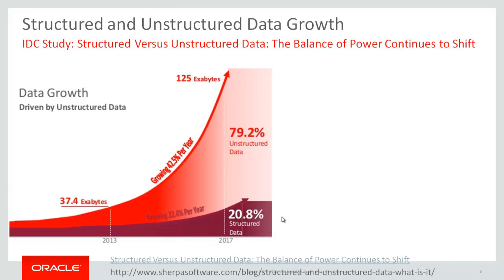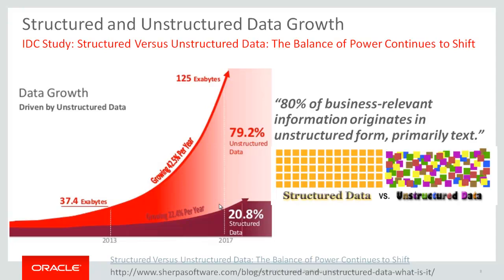Unstructured data is growing at a huge rate — studies cite 42.5% per year for unstructured data, though those numbers are probably underestimated. Regardless of which study you look at, the numbers are exploding, and the majority of all data is in fact unstructured. Other studies say 80% of business-relevant information originates in unstructured form, primarily text. For many, if not most, data mining and predictive analytics tools, they're not really good at dealing with unstructured data — they may have a special tool just for sentiment analysis or text search.